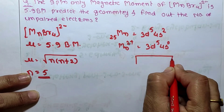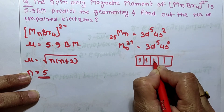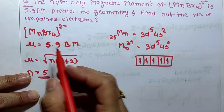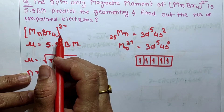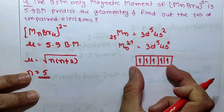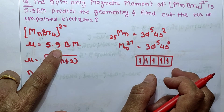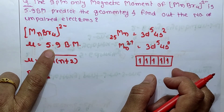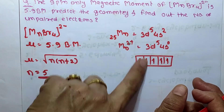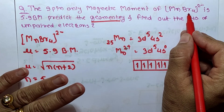Therefore the d orbitals contain 5 unpaired electrons. Bromine is a weak field ligand — it cannot cause pairing. So 5 unpaired electrons are present. We can directly find out from the spin magnetic moment: given 5.9 BM corresponds to n = 5 unpaired electrons. This is now verified.